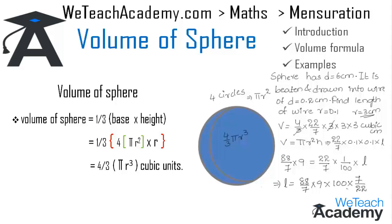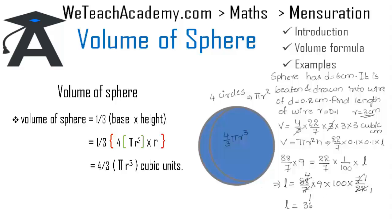Simplifying: 7 cancels once and 22 cancels with 88 to give 4. Multiplying all the terms, we get l = 3600 centimeters, which is the length of the wire.